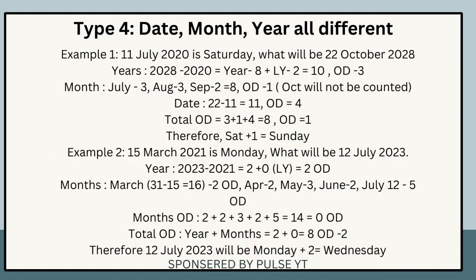Type 4 — Date, month, and year all different. Example 1: The 11th of July 2020 is Saturday; what will be the 22nd of October 2028? Years: 2028 − 2020 = 8 years + 2 leap years = 10 odd days ÷ 7 = remainder 3. Months: July = 3, Aug = 3, Sep = 2 = 8 odd days ÷ 7 = remainder 1 (October not counted). Date: 22 − 11 = 11 ÷ 7 = remainder 4. Total odd = 3 + 1 + 4 = 8 ÷ 7 = 1 odd day. Saturday + 1 = Sunday.